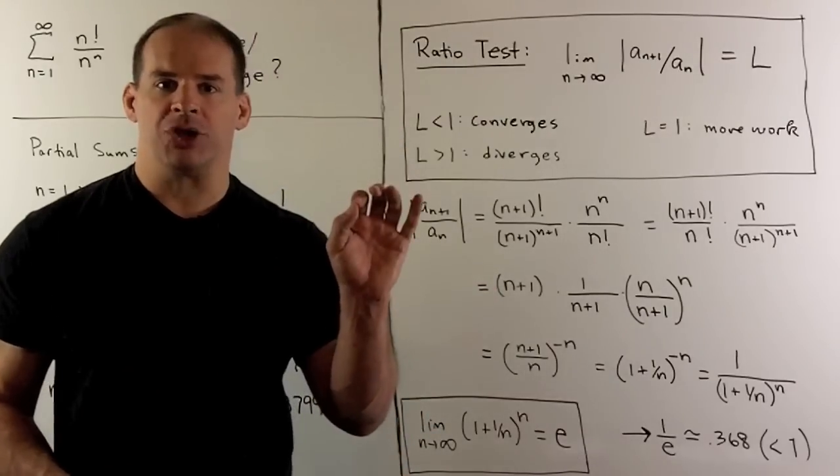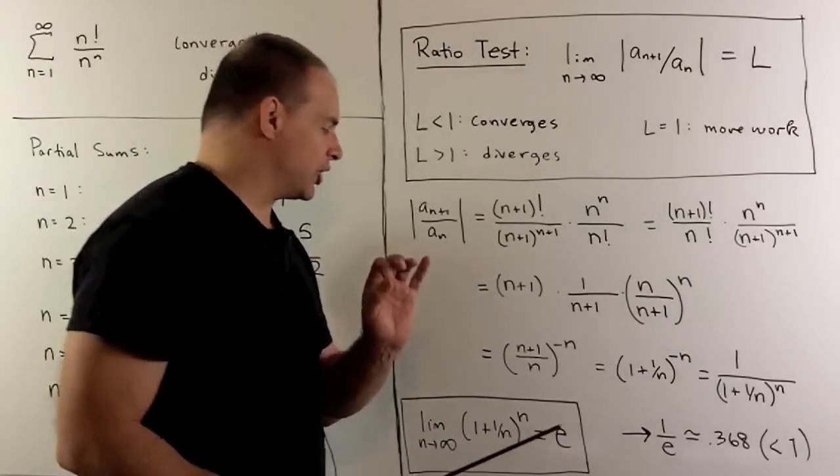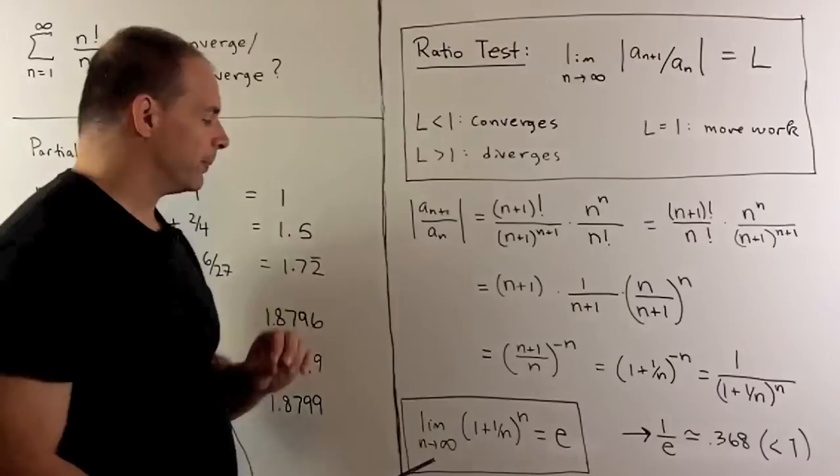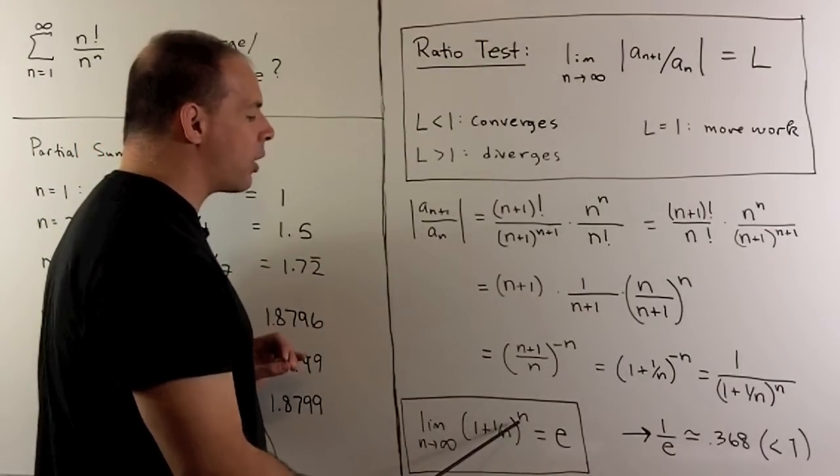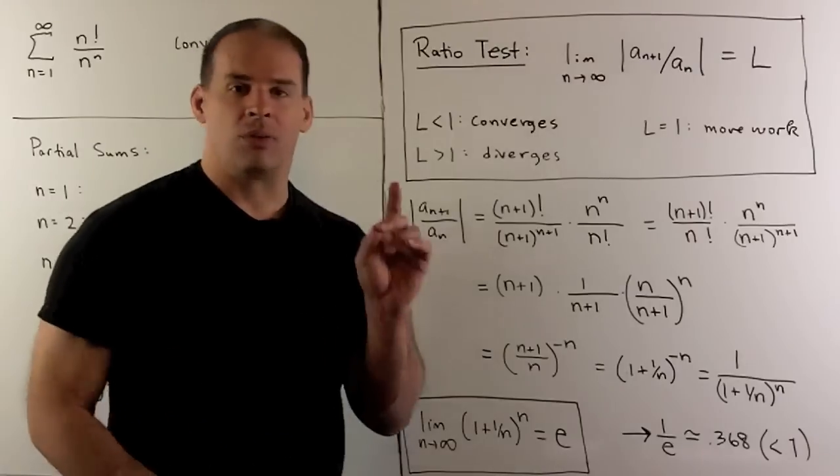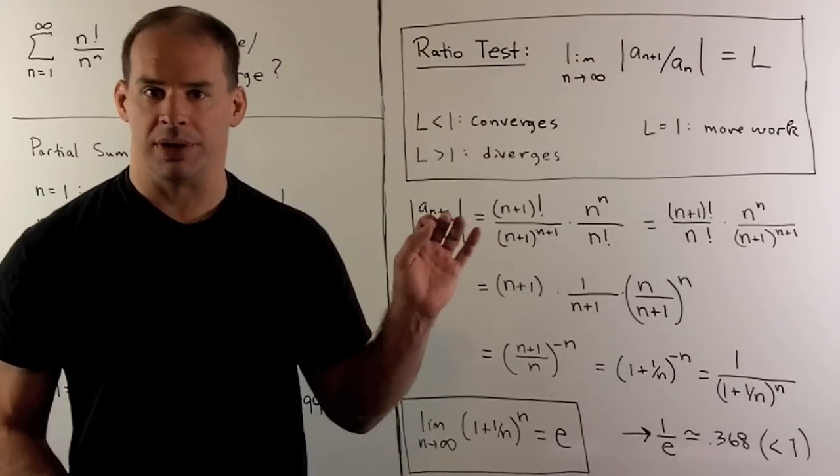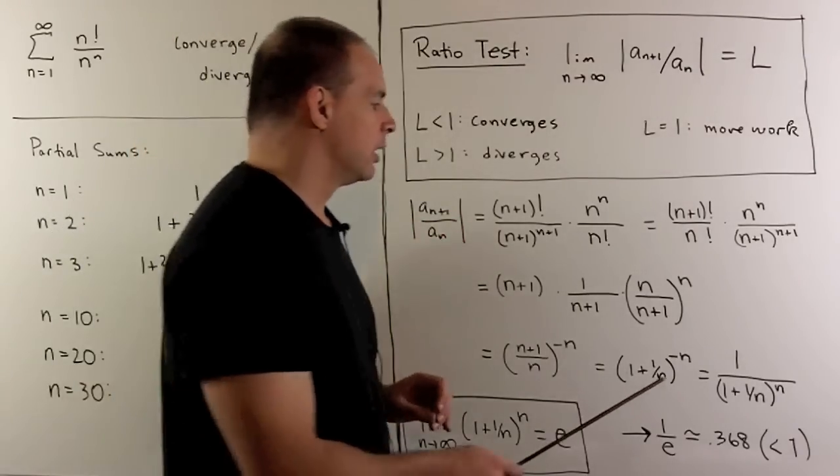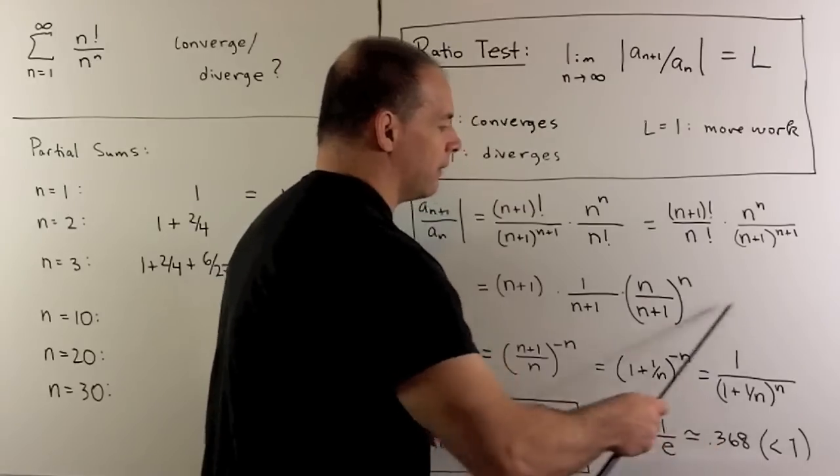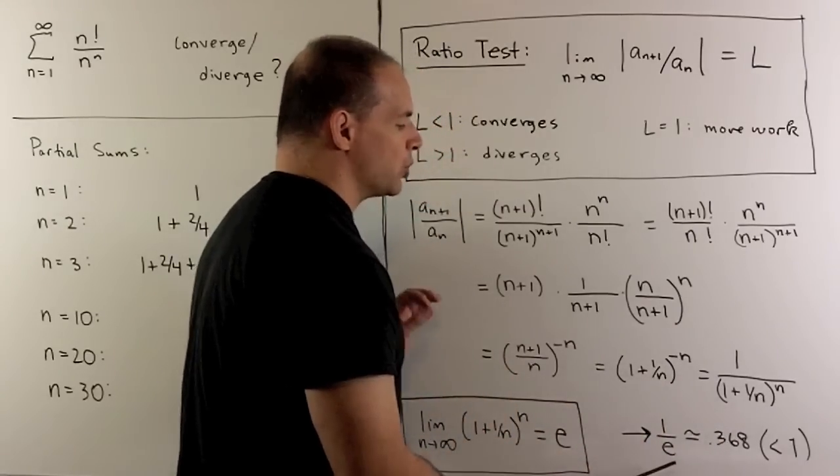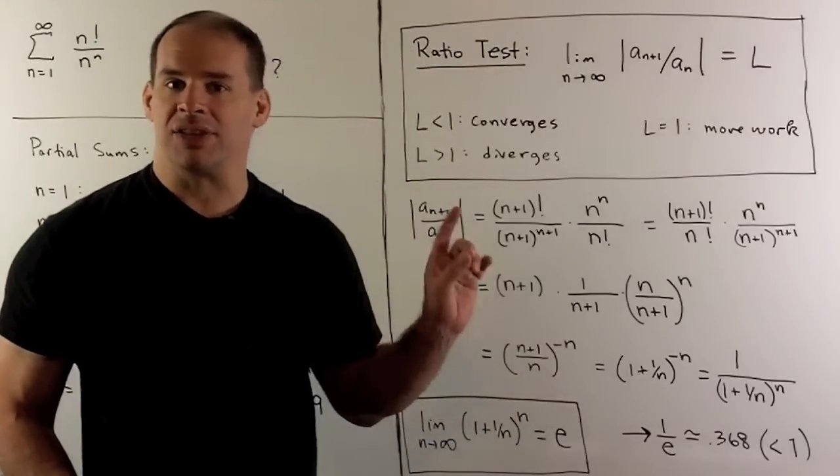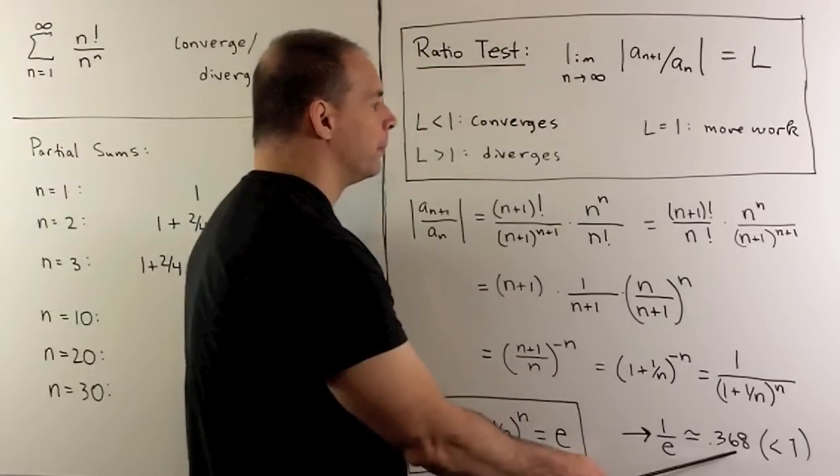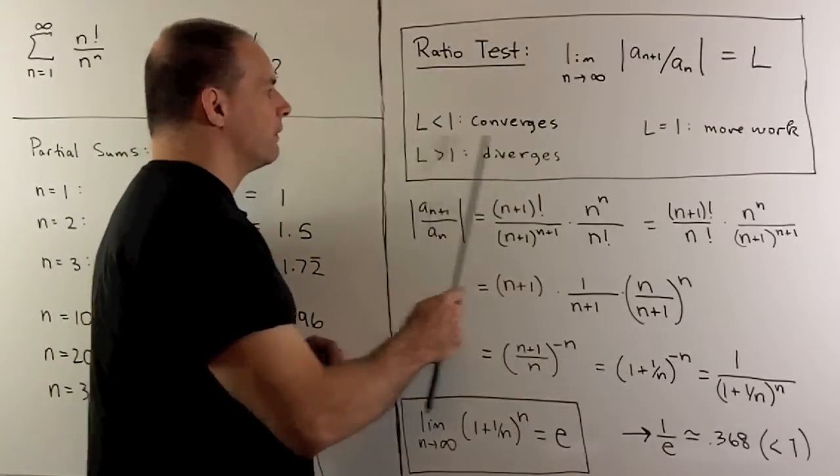Then we'll note, back when we worked with the exponential, we had as a definition, or as a consequence, the limit as n goes to infinity of 1 plus 1 over n to the nth power is equal to e. Recall, e is a number, roughly 2.7. So if we take the limit of this term here, that's going to go to 1 over e, which is roughly 0.368. Since that's less than 1, that's our L, we have that our series converges.